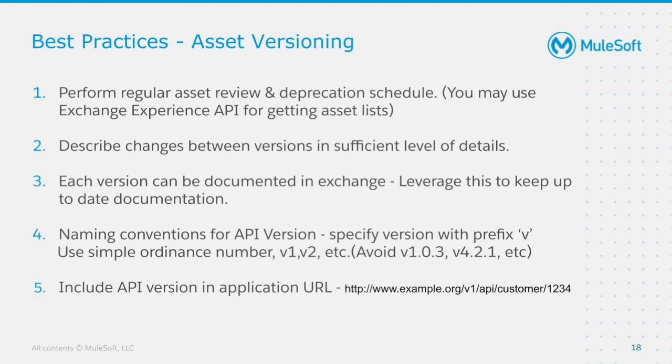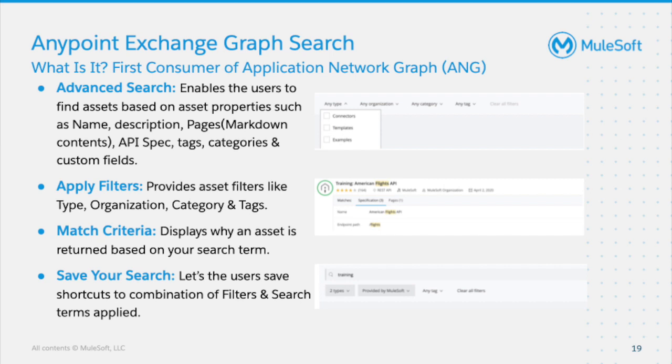As a best practice, include your API version in the application URL — for example, calling v1, or simply changing it to v2 if needed — and align this with documentation to clearly differentiate changes to the APIs. For search functionality in Exchange, we leverage an application network graph. Anypoint Exchange graph search provides improved discoverability with advanced search capabilities: you can find assets based on properties such as name, description, tags, or categories, apply filters by type, organization, category, and tags, see why an asset is returned, and save search combinations as shortcuts.